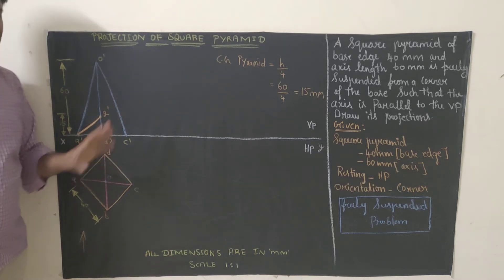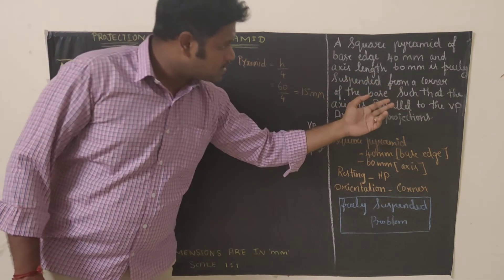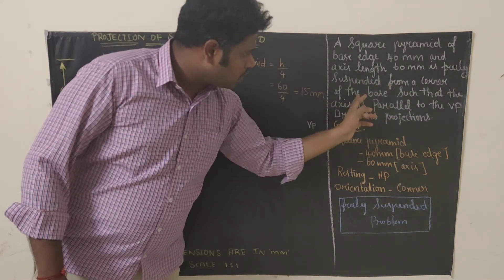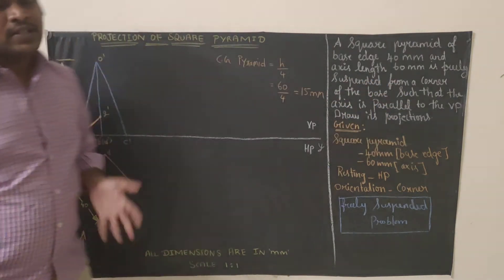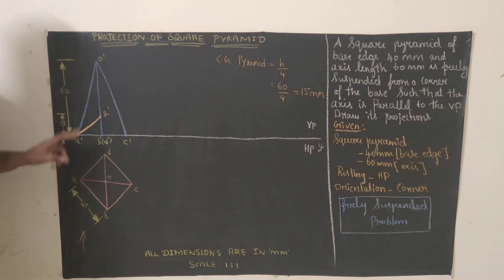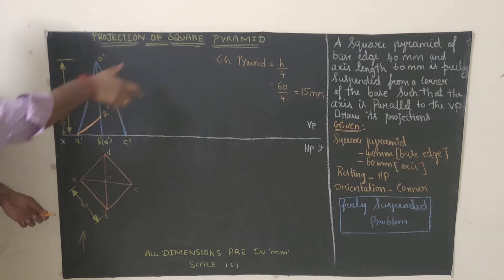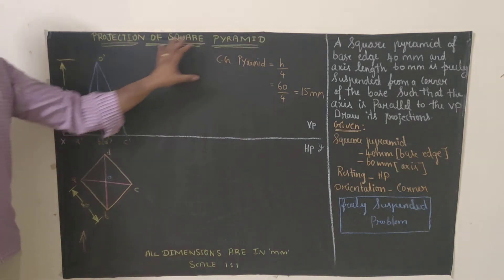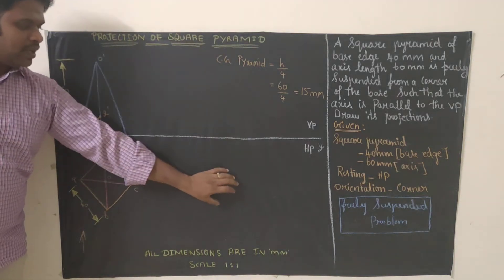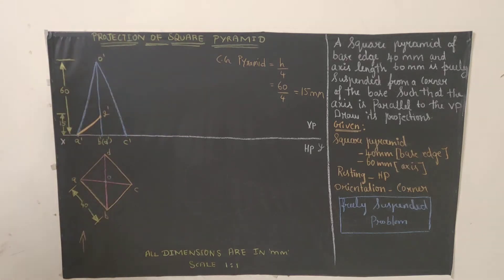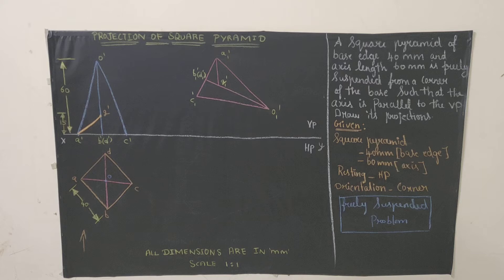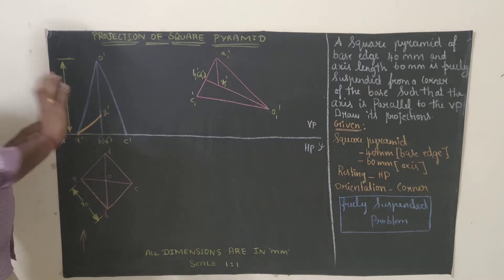We can take either G-dash to A-dash or G-dash to C-dash — both are correct. In this solution I'll take G-dash to A-dash. Join G-dash and A-dash. Now the next step is to tilt or hang the pyramid upside down from that corner. The diagram we are going to draw here will be the solution. We have drawn the front view and top view, and identified the center of gravity. The next step is to measure A-dash to G-dash.